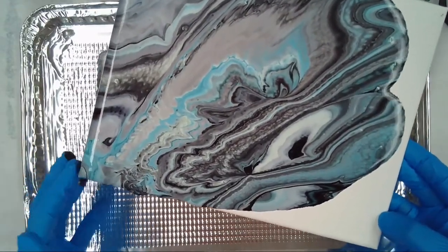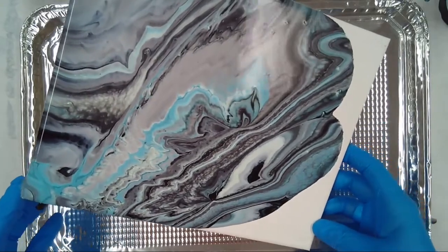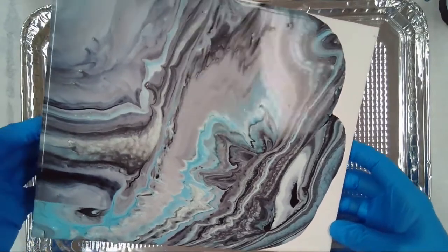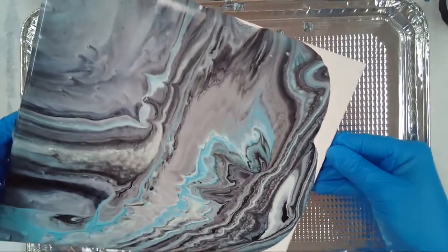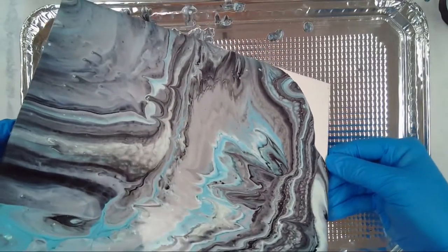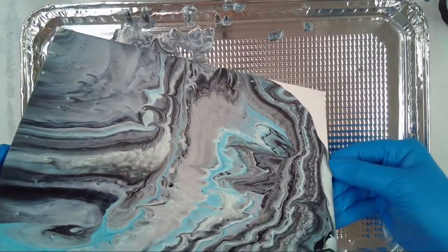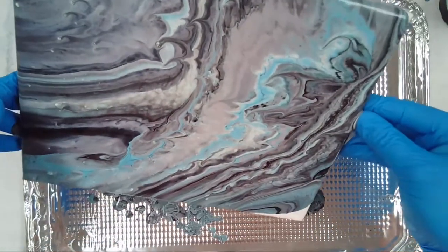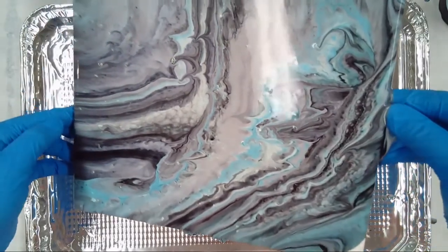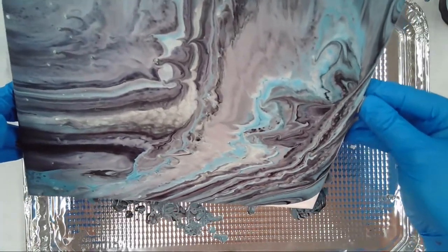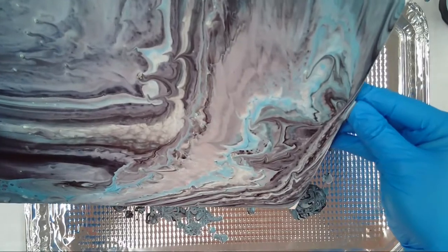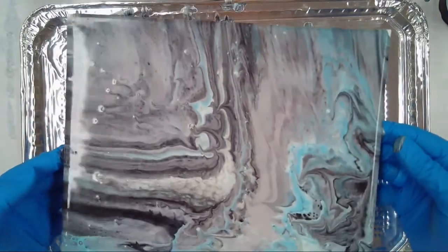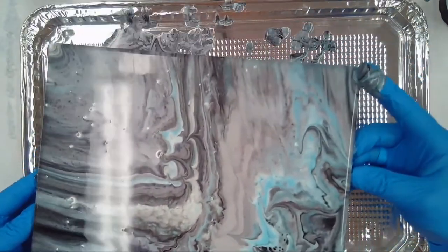You can use your finger to kind of help it along. I'm going to bring it this way and let it flow over that way. As you can see, it is kind of dripping over the edges. I'm going to help it a little bit on this corner here.